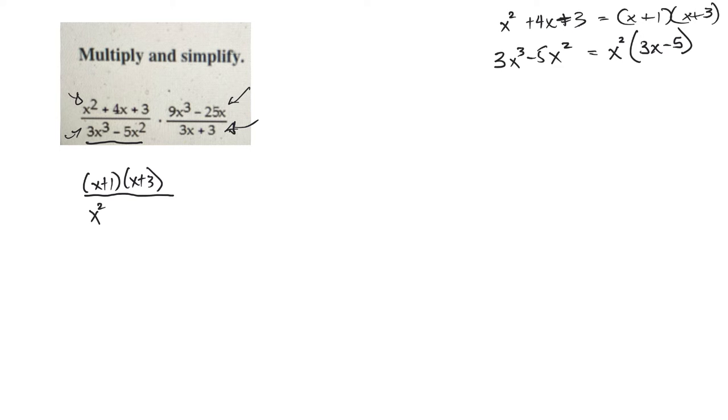Okay, so x squared, 3x minus 5, times, okay, 9x cubed minus 25x. The first thing I can do is factor out an x. So it's 9x squared minus 25. And then this looks like the difference of squares.